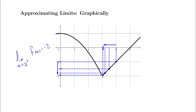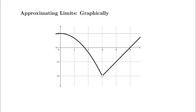It looks like on the left and on the right, the function values are approaching the same y value. I'm really not taking into account that this point is open — our function seems to not be defined at x equals 3, we've got a hole. I don't care, because what we're looking at is just what y value we're getting really, really close to — arbitrarily close to — as x gets close to 3 but is not equal to 3, whether from the left or the right.